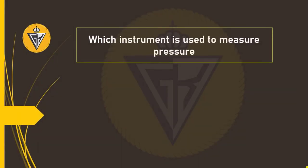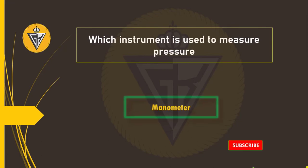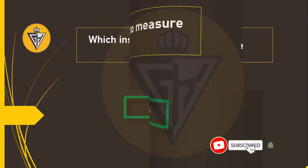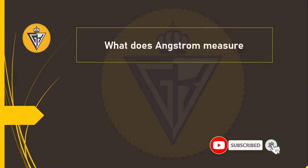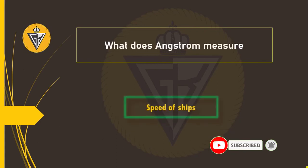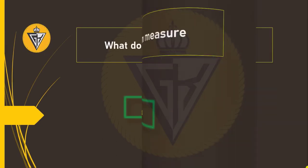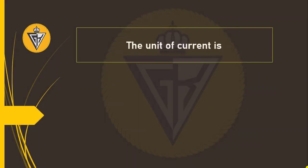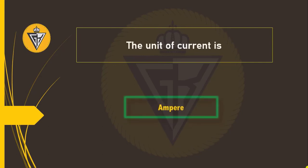Which instrument is used to measure pressure? Manometer. What does angstrom measure? Speed of ships. The unit of current is ampere.